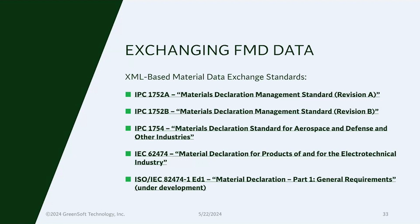There's also a new standard being developed in coordination between ISO and IEC — the ISO/IEC 82474-1. That's a material declaration standard intended to be cross-industry, allowing textiles, packaging, and other industries besides just electronics to participate in this process. Because there's a merging of technologies — there's clothing with electronics in it now, and packaging becomes a bigger problem as regulations expand. This is an answer to that, and it should be coming to bear in the next year or so.